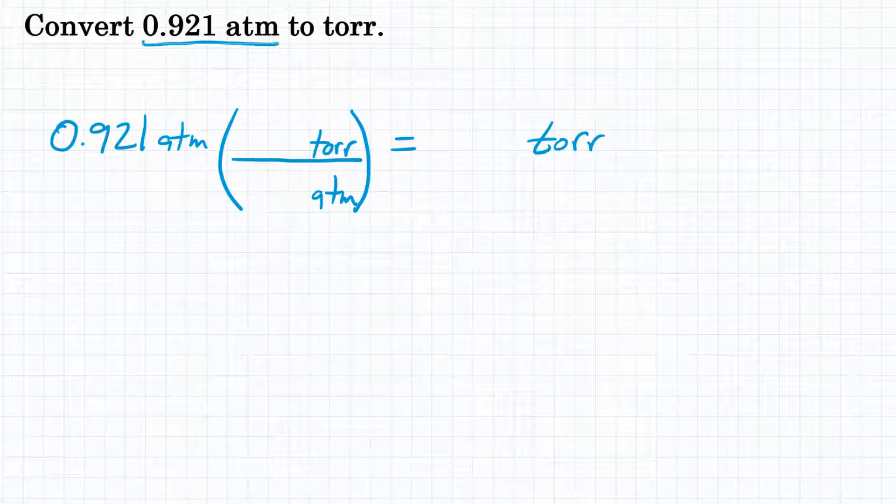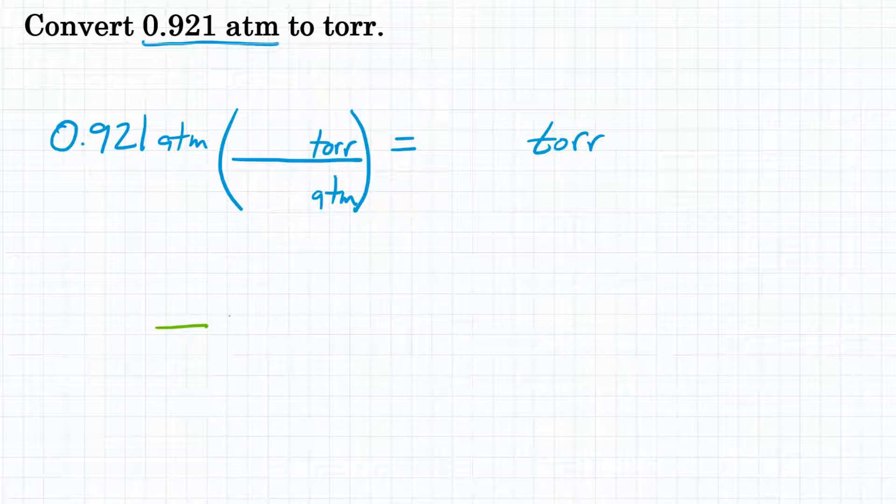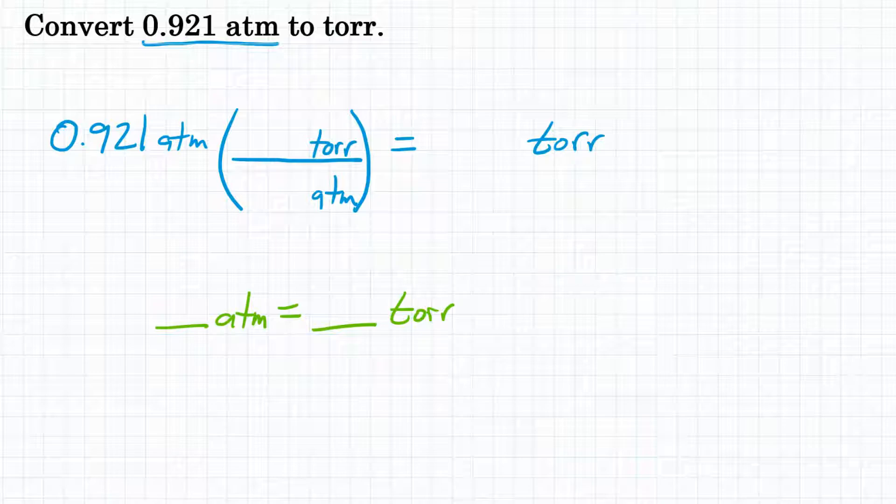So what is the relationship between these two units? In other words, how many atmospheres equals how many torr? We need to know some relationship of these two units. So one relationship would be that one atmosphere is 760 torr. So you can use that relationship in this problem. So we will put one on the bottom with atmospheres, and 760 on top of our conversion factor with torr.